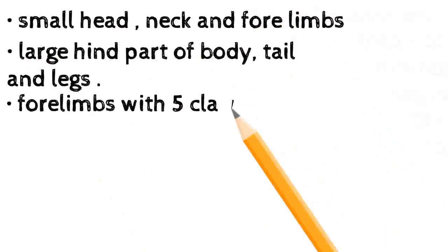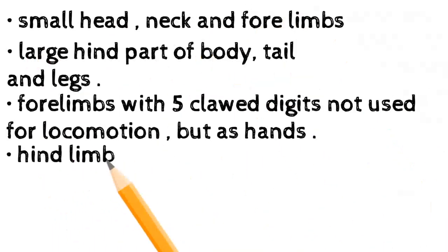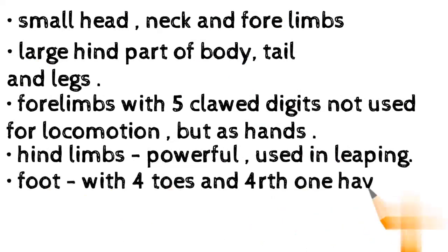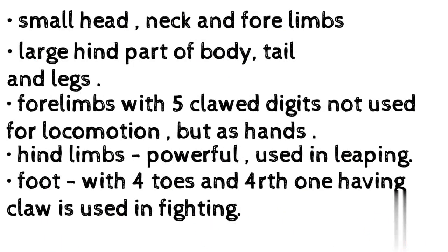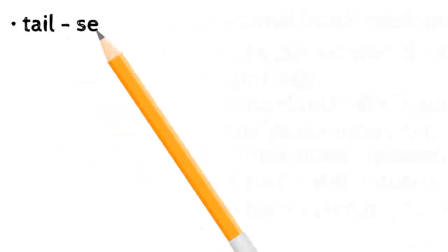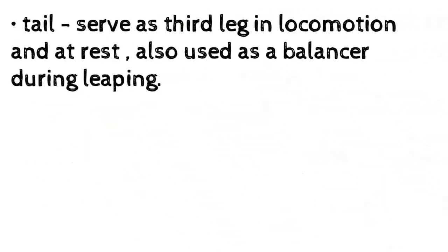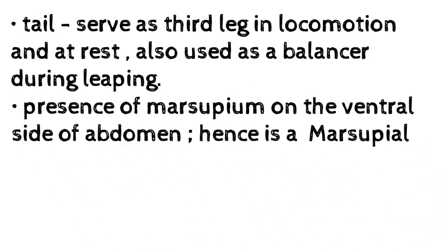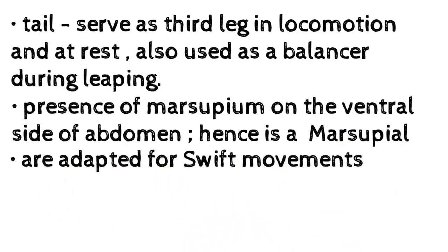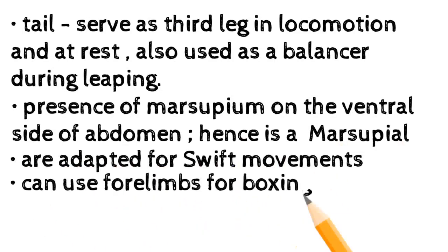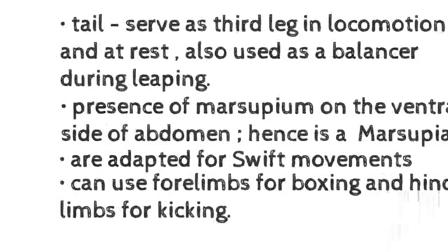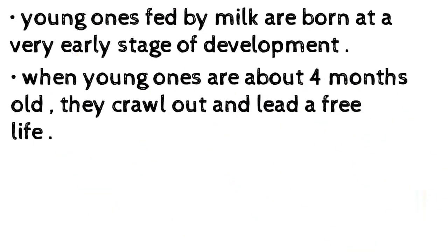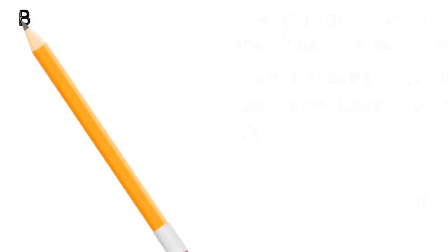Kangaroo has a small head and neck, four limbs, and a large hind body with a powerful tail and legs. Four limbs with five clawed digits — forelimbs not used for locomotion but as hands. Hind limbs powerful for leaping; foot with four toes, the fourth having a claw used in fighting. Tail serves as a third leg during locomotion and rest, and as a balancer during leaping. A marsupium on the ventral abdomen classifies it as a marsupial. Adapted for swift movements; forelimbs used for boxing, hind limbs for kicking. Young ones are born at a very early stage of development; at about four months old they crawl out and lead a free life.